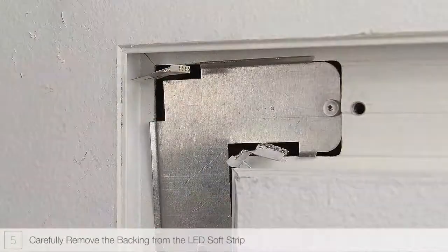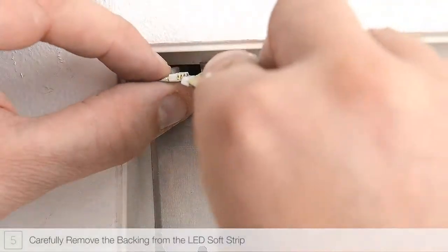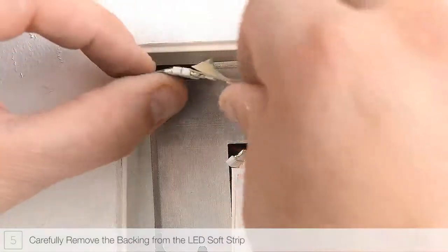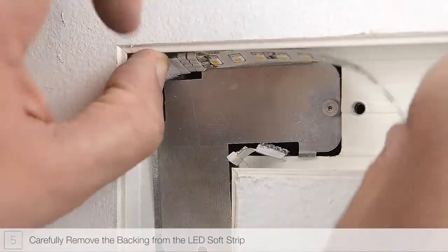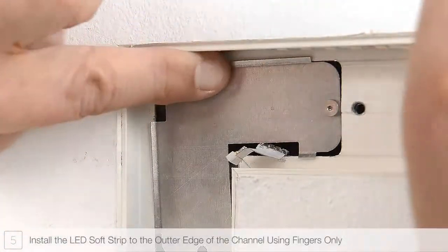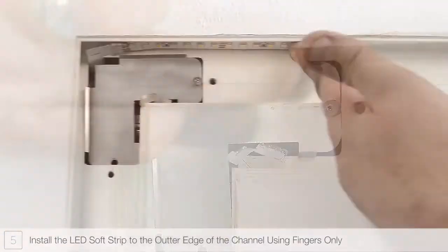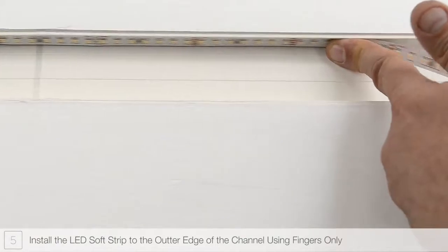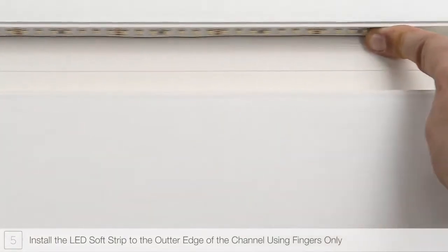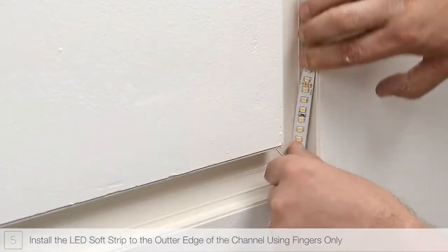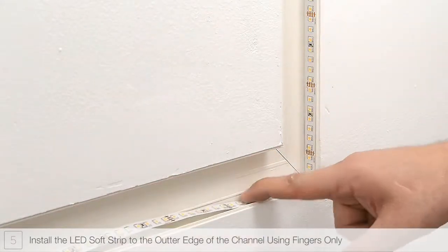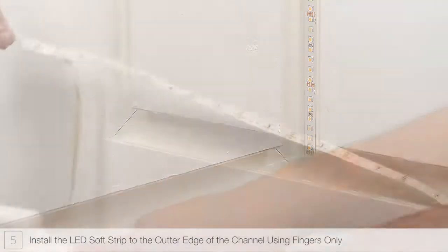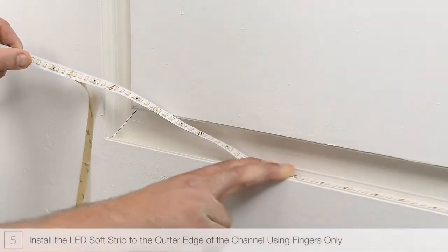Begin installing the LEDs by removing a small section of the paper backing from the strip. Pull back a few inches of the paper backing. Gently press the adhesive backing of the soft strip into the outer edge of the channel while continuing to remove the paper backing. It is important that when installing the soft strip, no tools or hard instruments are used that may cause damage. Only use fingers to install the strip.